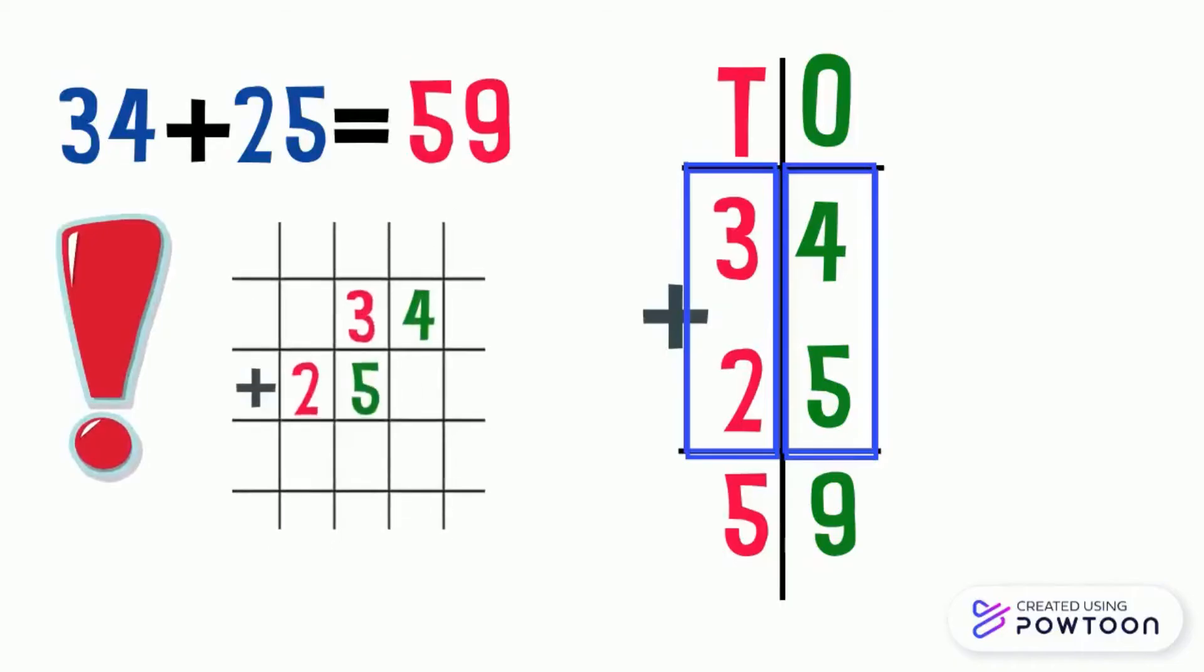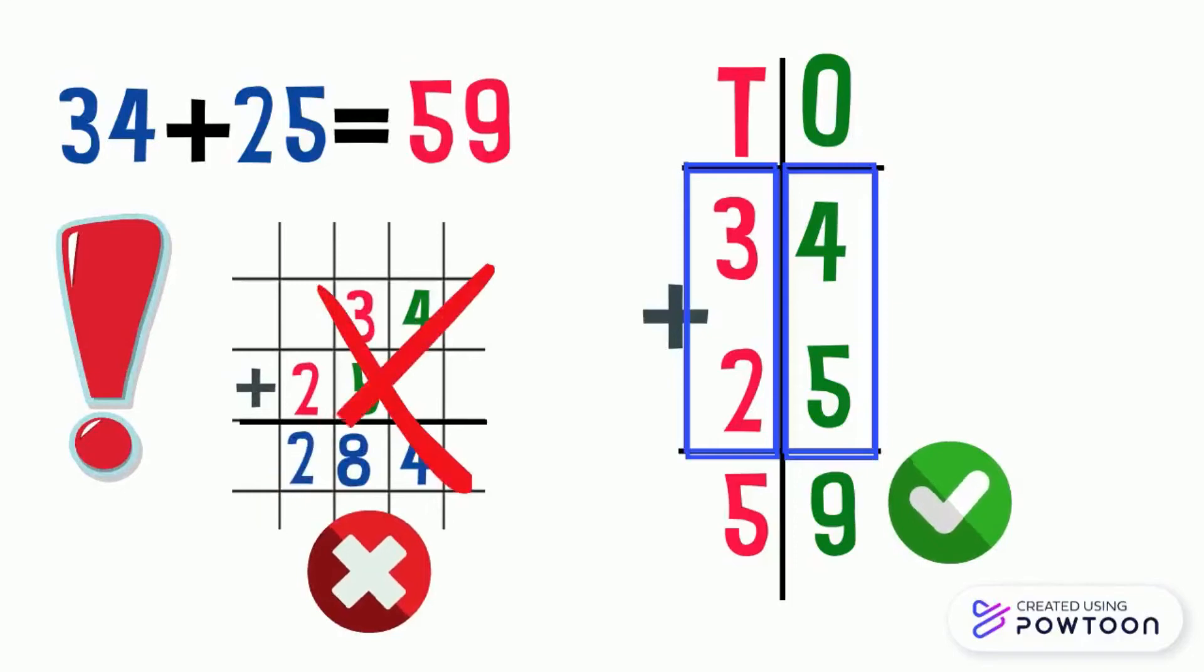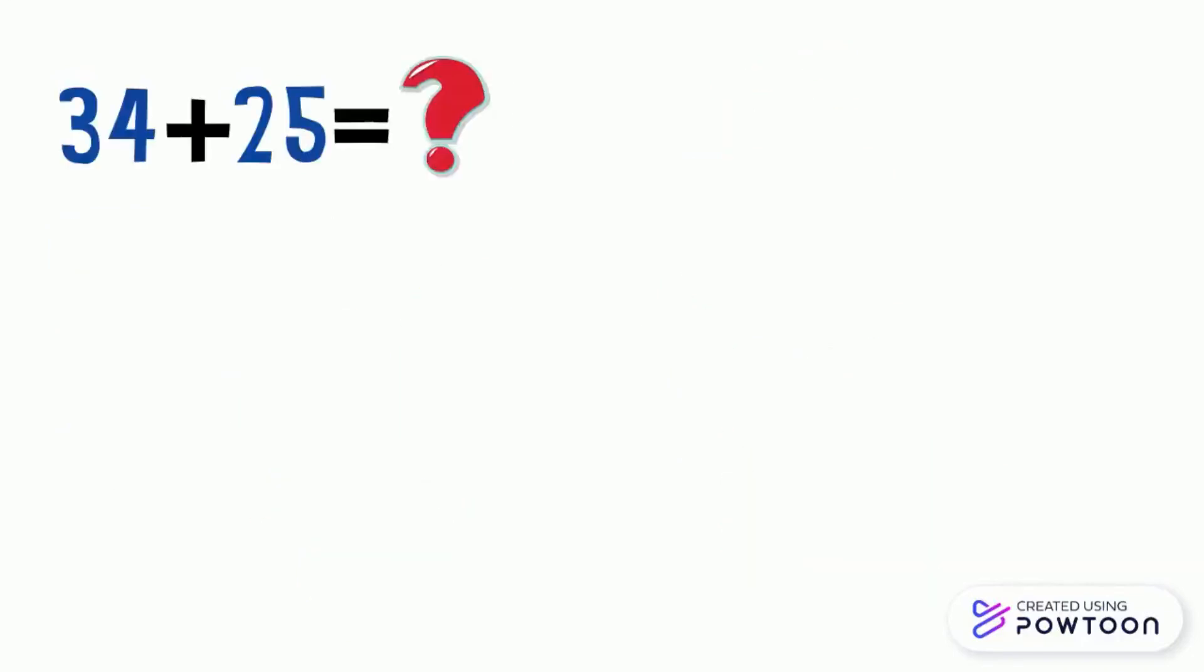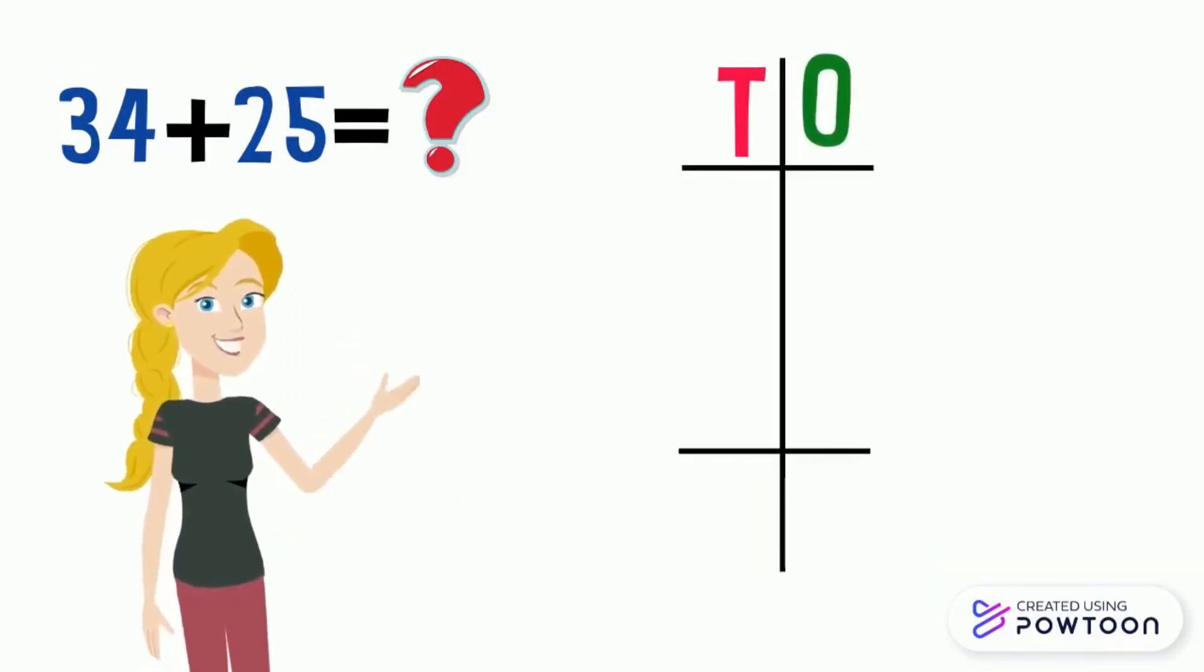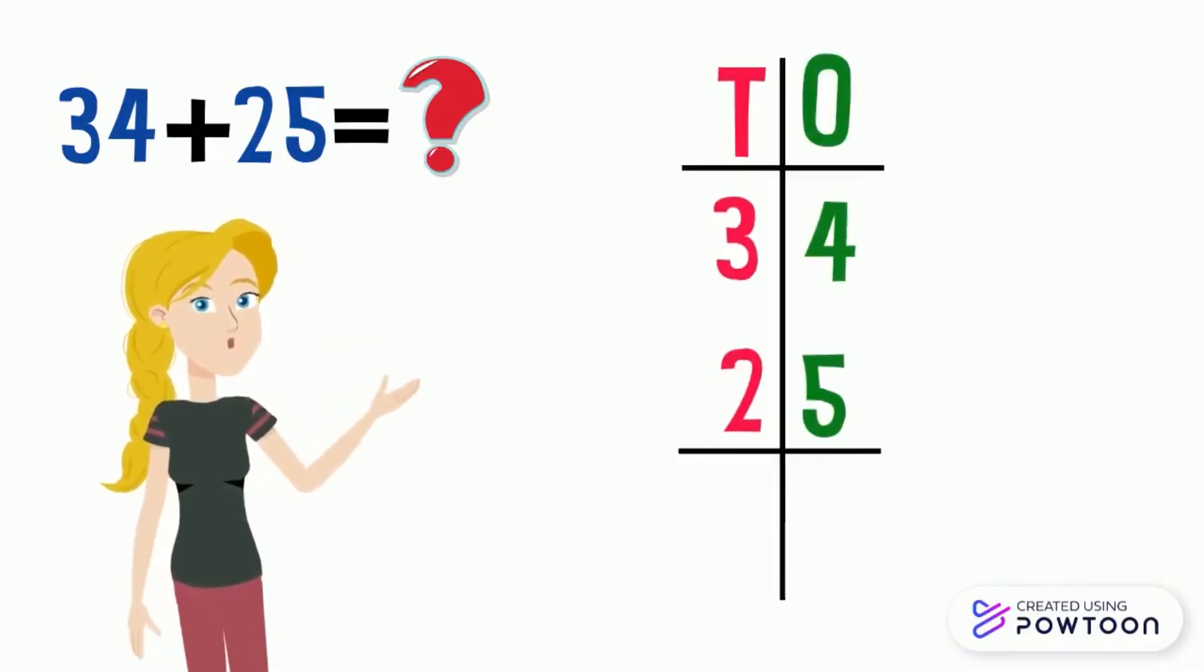Pay attention. If you didn't put the ones below each other and also the tens, your answer will be wrong. So, we will repeat. To add two numbers by putting them in columns, we must write the ones below each other.